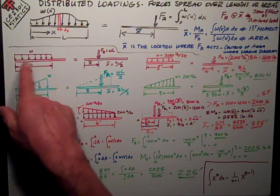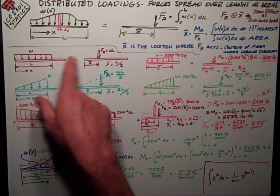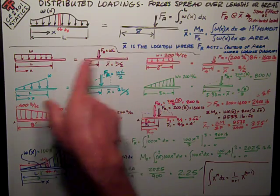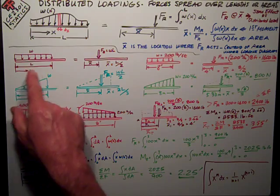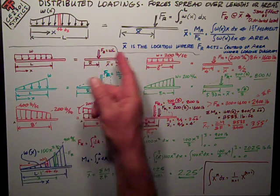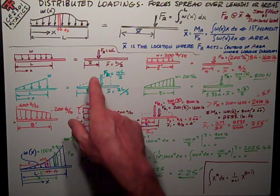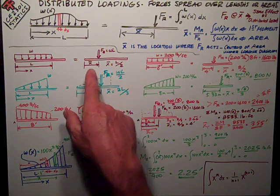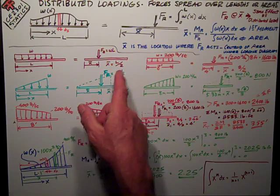We're going to say that this uniformly distributed load, this rectangle, the area under the rectangle is the force, which is w. It's just a rectangle that's w tall by l wide, or the base. So the area of a rectangle is obviously just w times l, so that's going to be the force. And we can figure that x-bar is the distance to the centroid of a rectangle, which is right in the middle, l over 2.